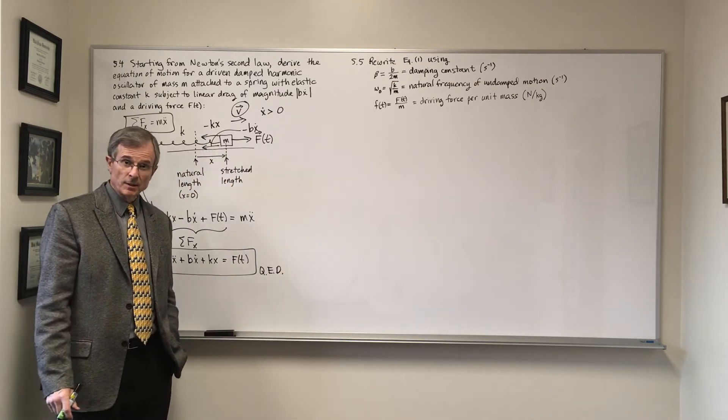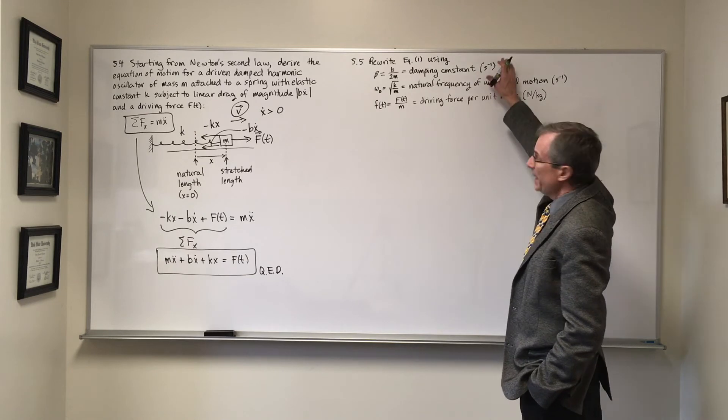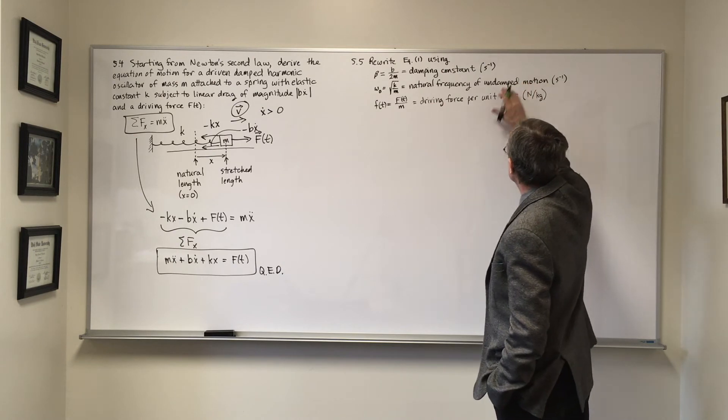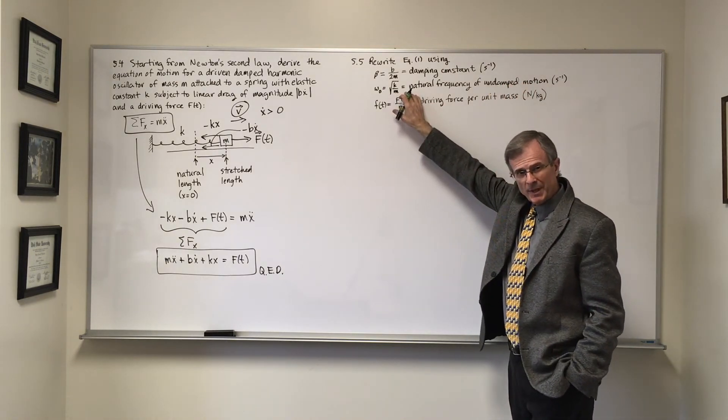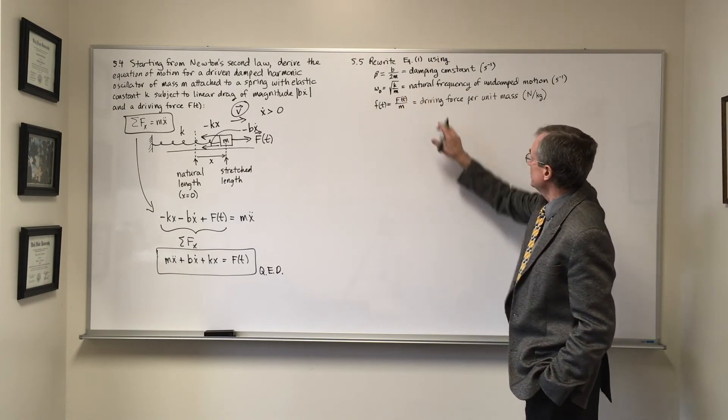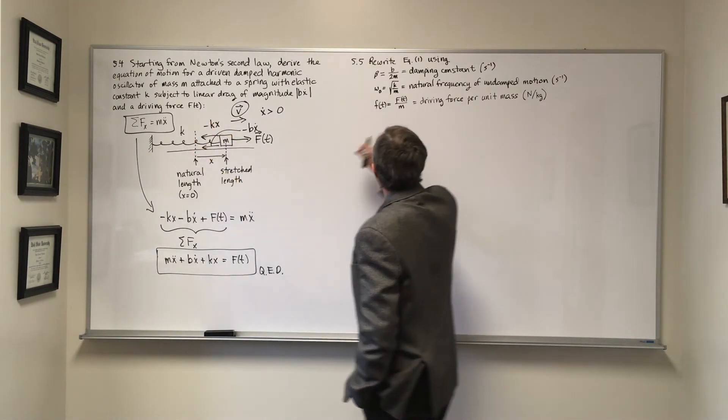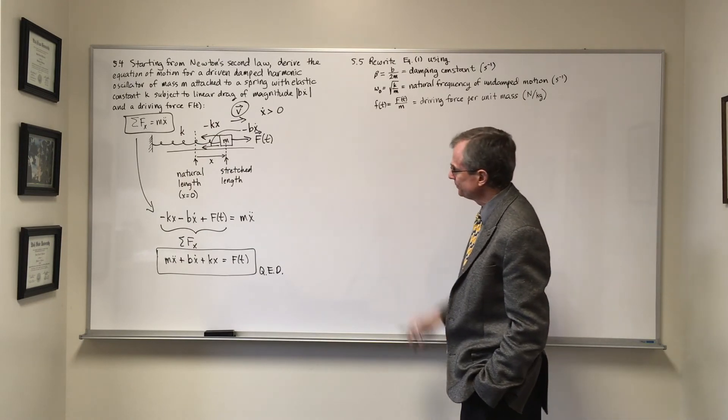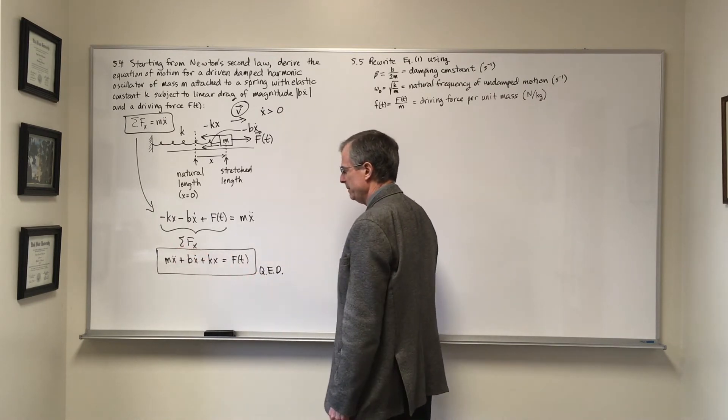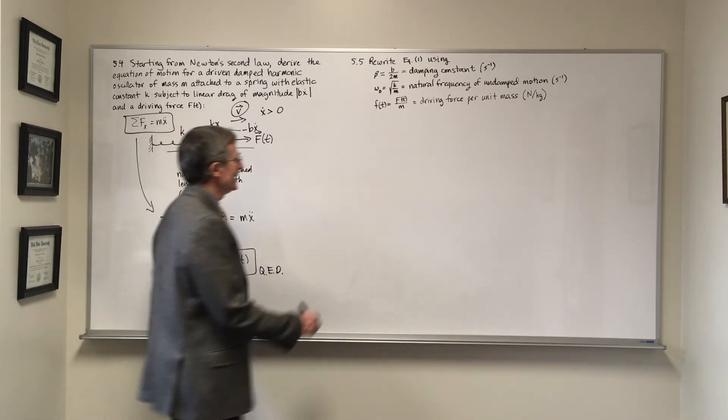For this one, now we're going to rewrite this equation using the damping constant that we defined earlier for damped harmonic motion, the natural frequency of undamped motion we wrote before for damped harmonic oscillator, and then we're going to also define a driving force per unit mass, which is that driving force F measured in newtons divided by the mass of the object. The way that we do it is just divide through this whole equation by the mass. So this term, when we divide by the mass, just turns into X double dot.